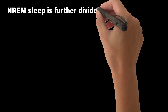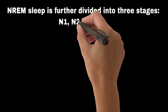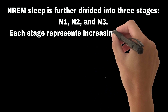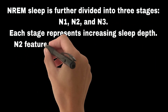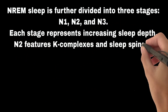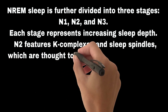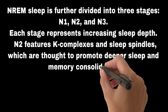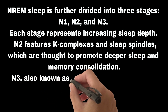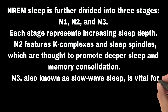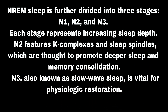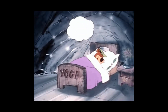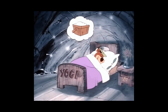NREM sleep is further divided into three stages: N1, N2, and N3, each representing increasing sleep depth. N2 features K-complexes and sleep spindles, which are thought to promote deeper sleep and memory consolidation. N3, also known as slow-wave sleep, is vital for physiologic restoration. REM sleep is associated with dreaming and is crucial for memory consolidation and learning.